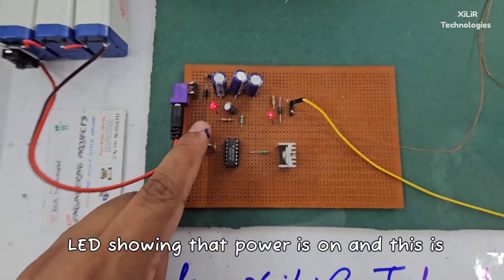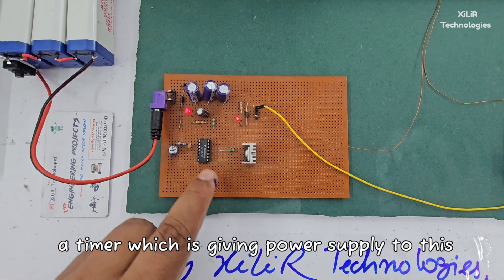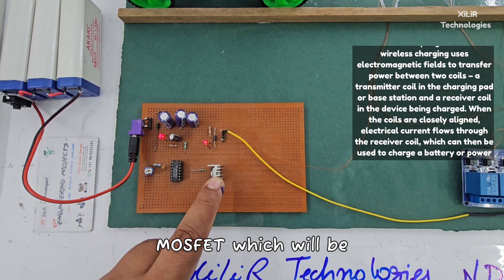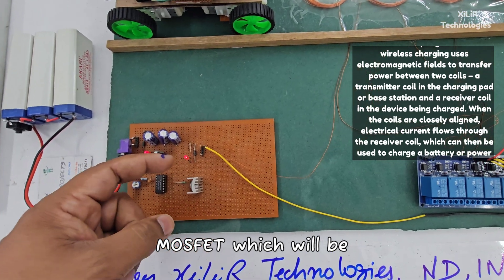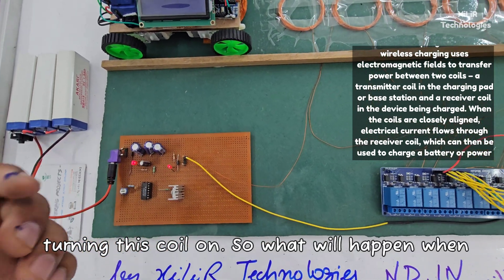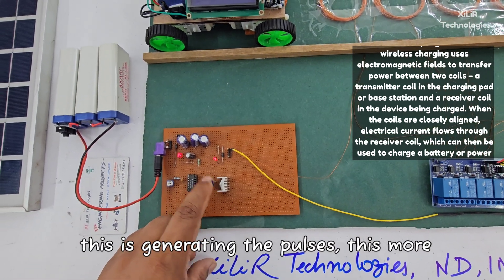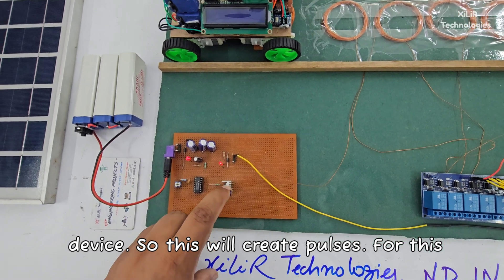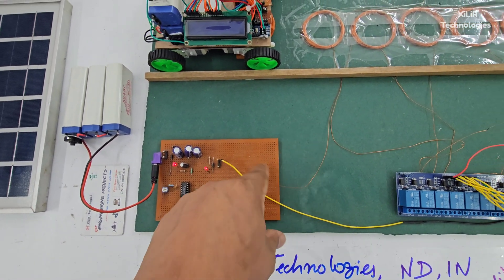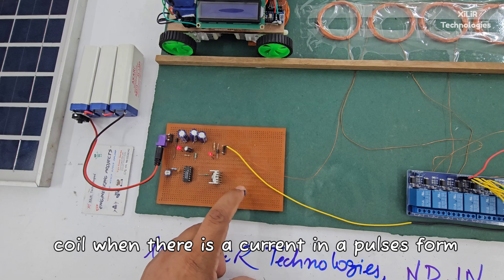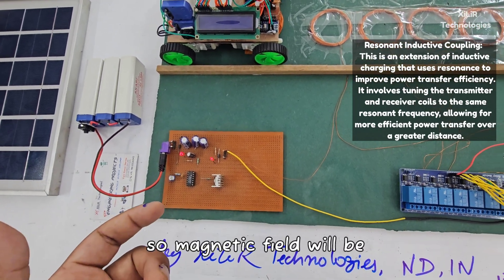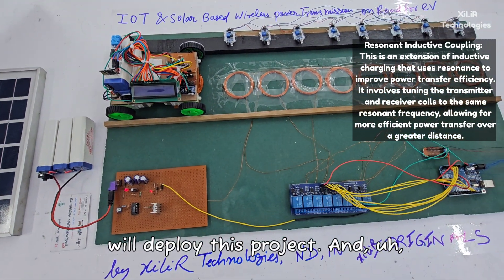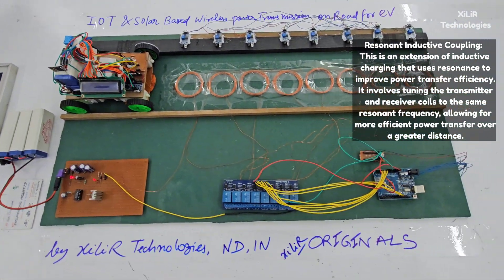When we turn on this circuit, this LED shows that power is on. This is the timer which is giving power supply to this MOSFET, which will be turning this coil on. When this is generating the pulses, this MOSFET will be on and off. This is a switching device so it will create pulses for this coil. When there is current in pulse form, the change in current in the coil creates a magnetic field generated on the secondary coil. So that's the working principle of this project.